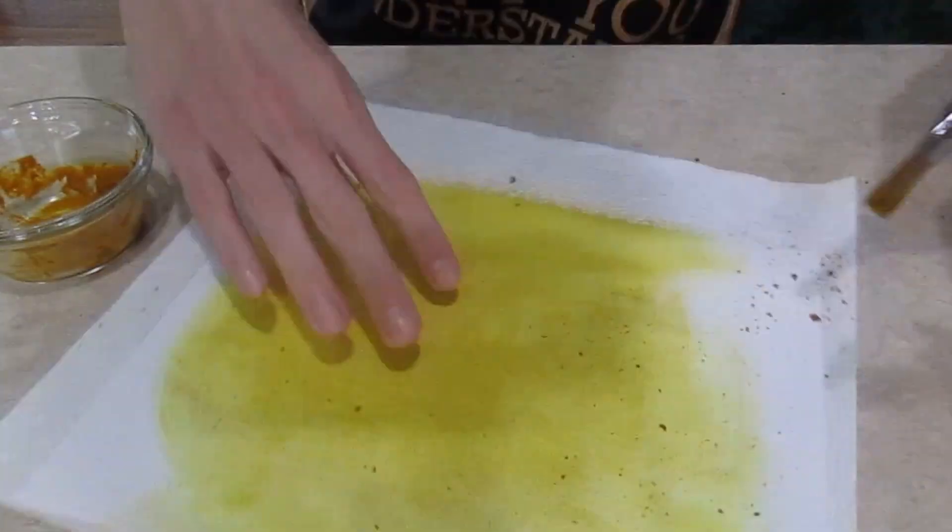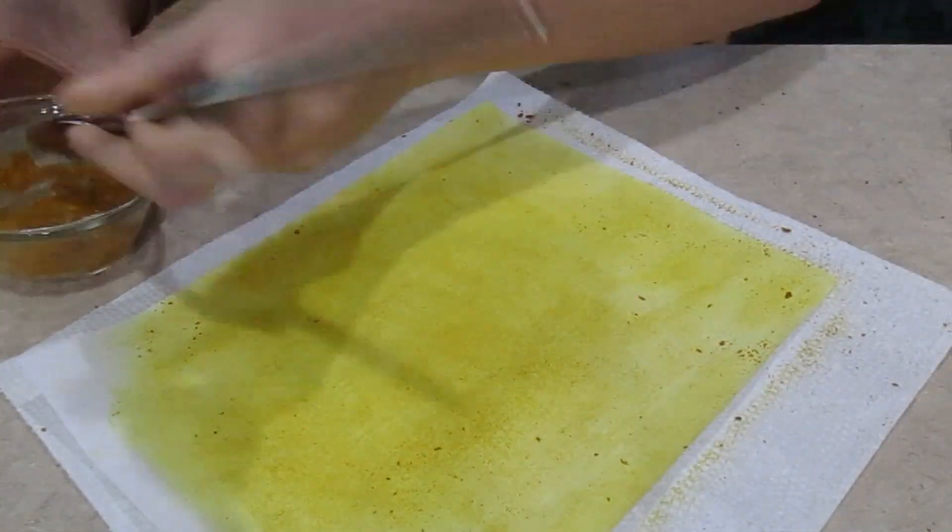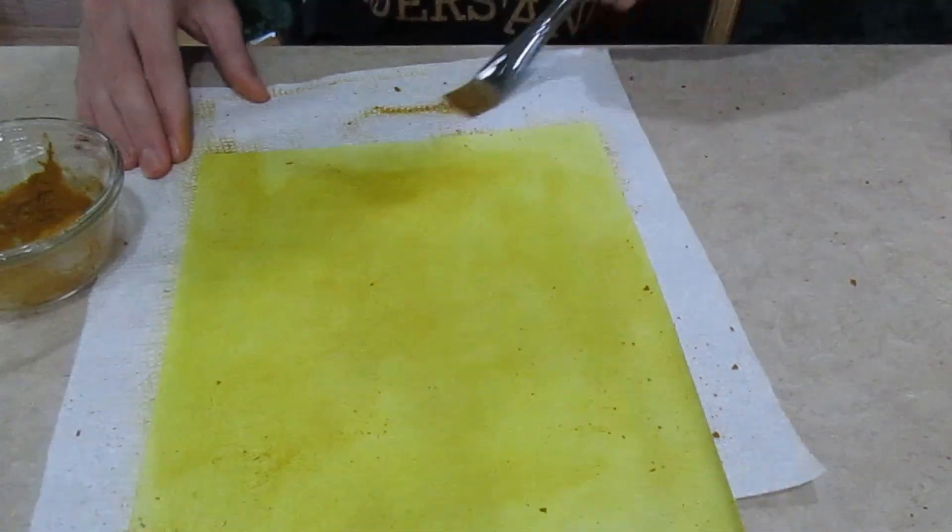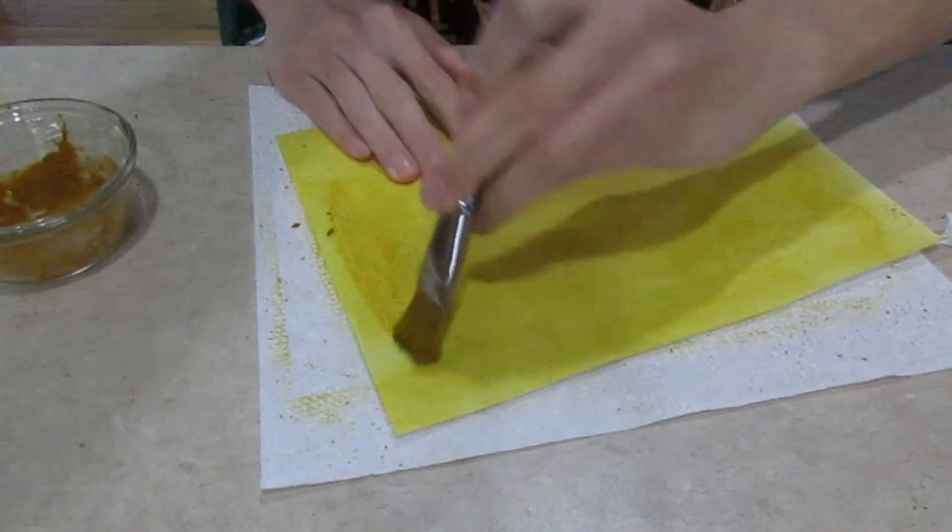The turmeric is an indicator, and when you put it in a base such as the washing soda bath, it turns red, and that's why the image becomes more vibrant and red.